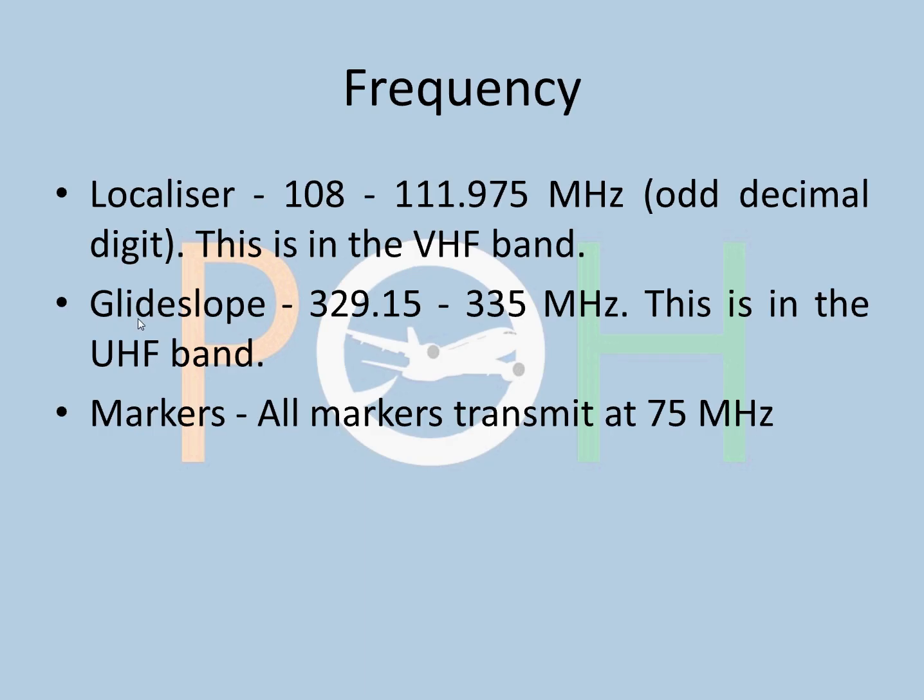Frequency of the localizer is 108 to 111.975 MHz. Odd decimal is in the first digit. This is in the VHF band. Basically, what it means is 109.1, 110.3, 111.5. All the odd decimals are in the first digit.